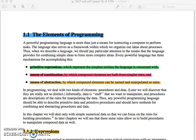In programming, we deal with two kinds of elements: procedures and data. Later, we will discover that they are not really so distinct. Informally, data is stuff that we want to manipulate, and procedures are descriptions of the rules for manipulating the data.